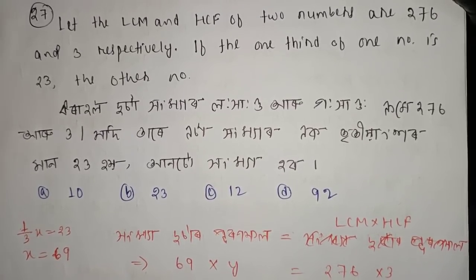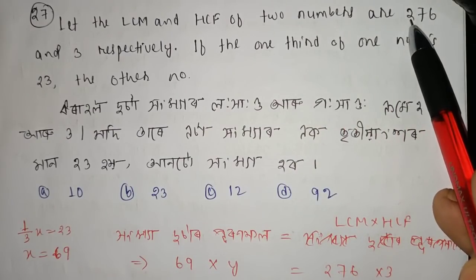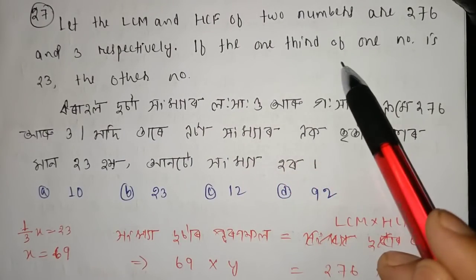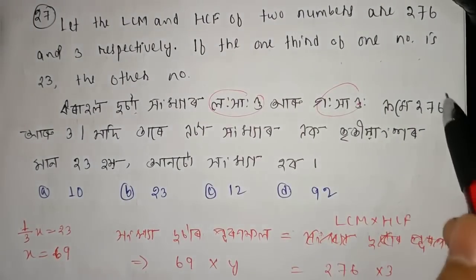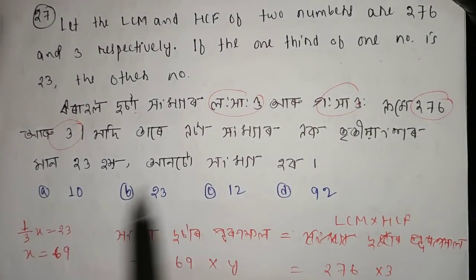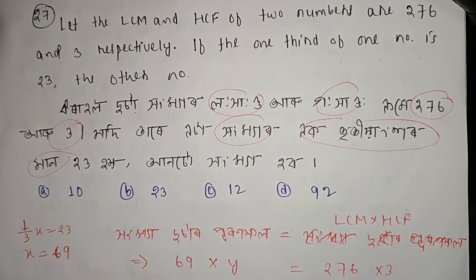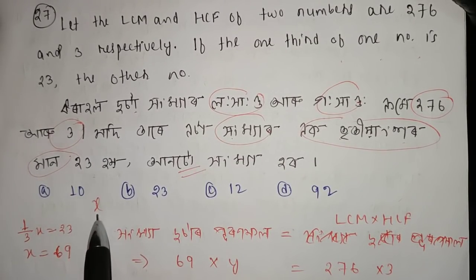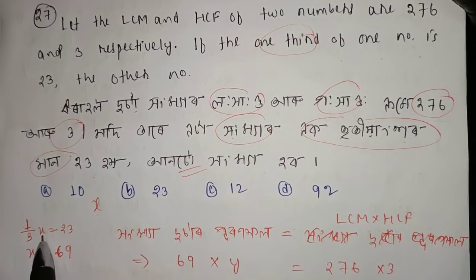Next question: the LCM and HCF of two numbers are 276 and 3. If one-third of one number is 23, then x equals 69. We set up: LCM × HCF = product of the two numbers. So 276 × 3 = product.